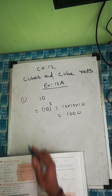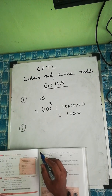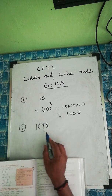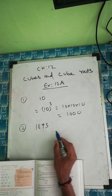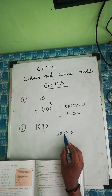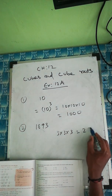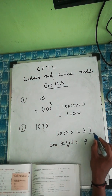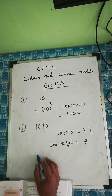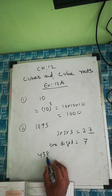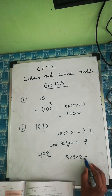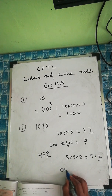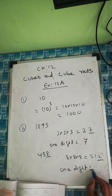And question number 2: find the unit digit of the cubes of the following number. You are given 1893. So the last digit is 3, so you multiply 3 times: 3 into 3 into 3 is 27. So the one digit of the cube number is 7. For example, next one, if you take 438, take the last digit 8: 8 into 8 is 64, 64 into 8 is 512. So therefore the unit digit is 2.